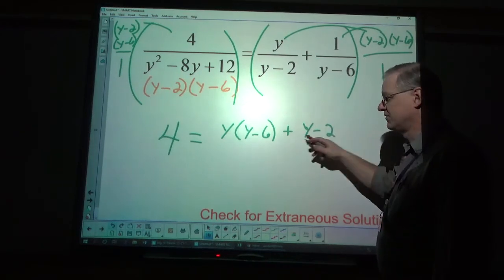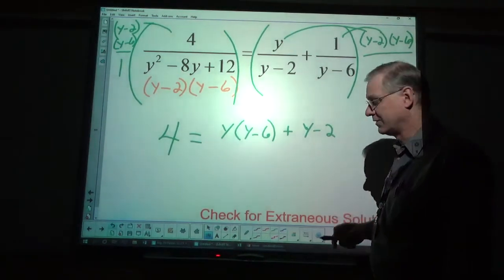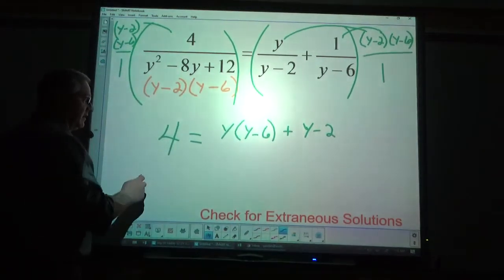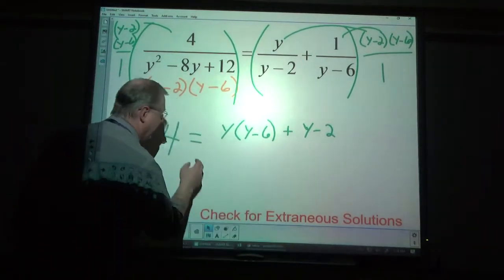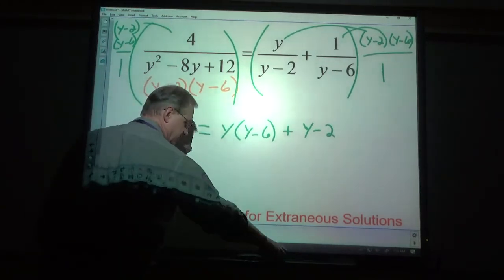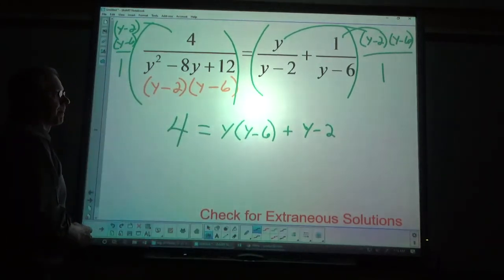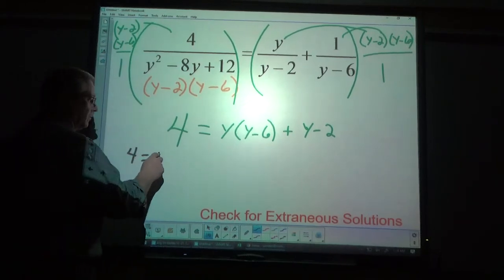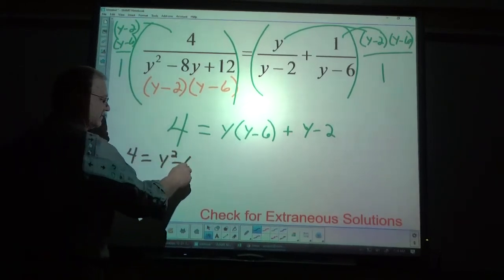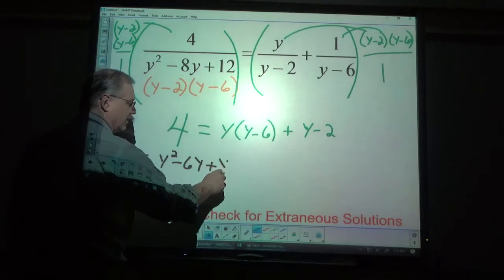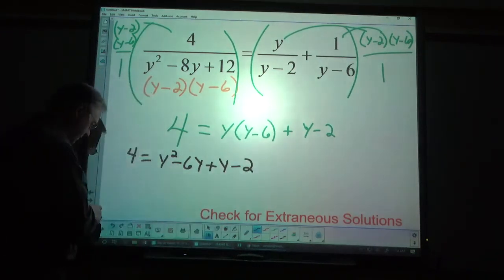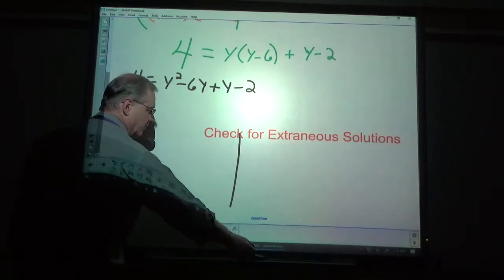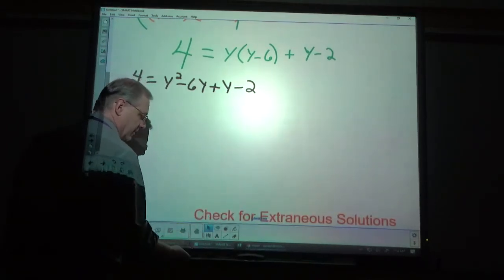If that's the case, if this were a negative, you'd put a parenthesis around it. Let's keep going. I'm going to distribute y squared minus 6y plus y minus 2. Let's extend this.